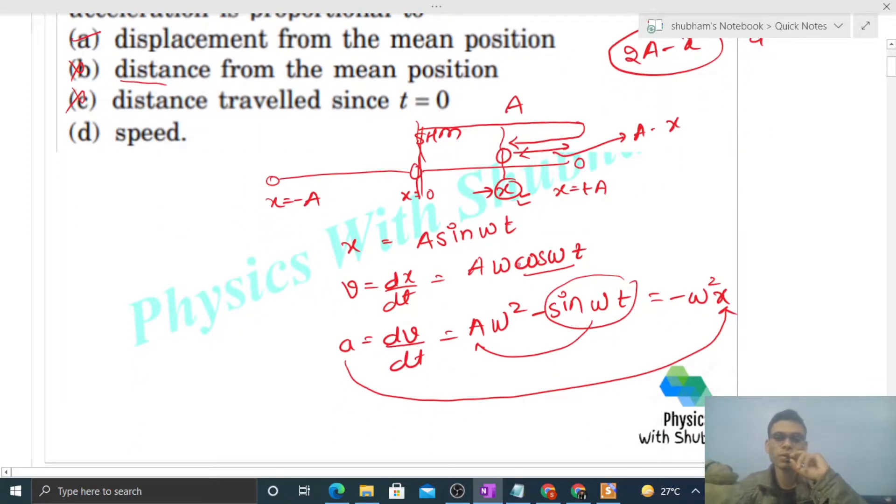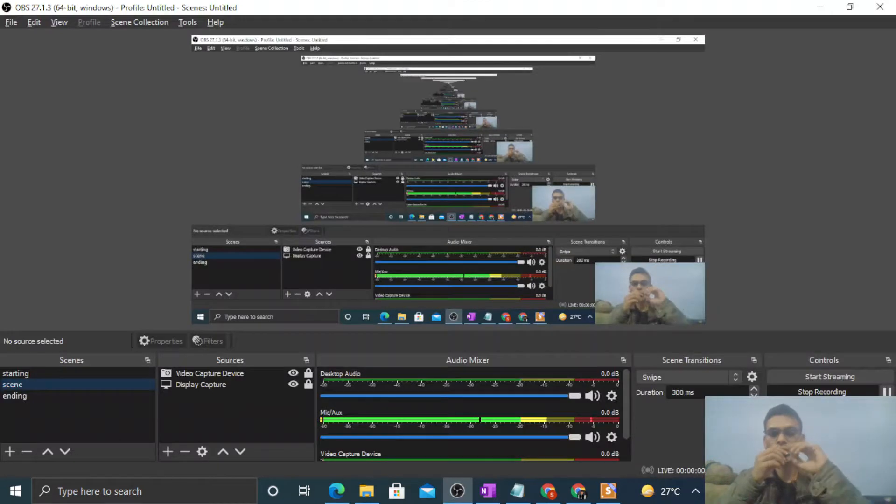Speed, see, the speed is A omega cos omega t, right? So this is not proportional to A. Acceleration is not proportional to v; it is proportional to x. So I think you have understood. Let me know if you still have any confusion. Okay, let's keep working hard. Best of luck, bye.